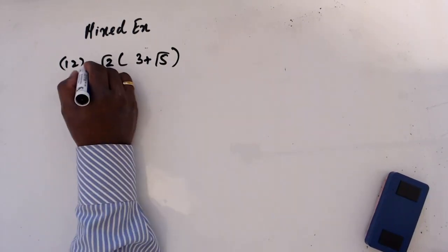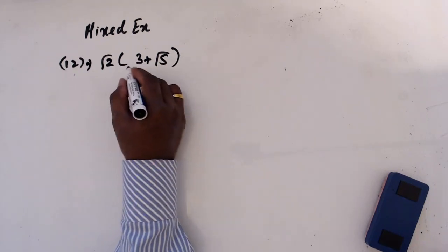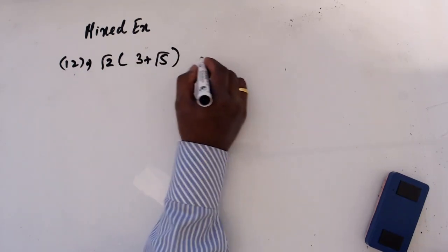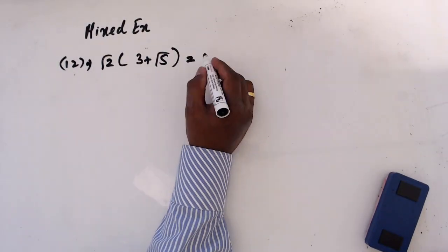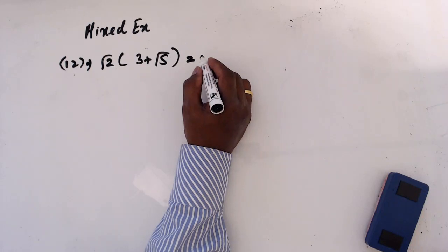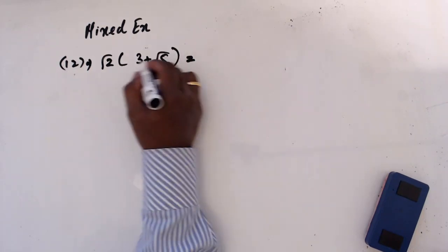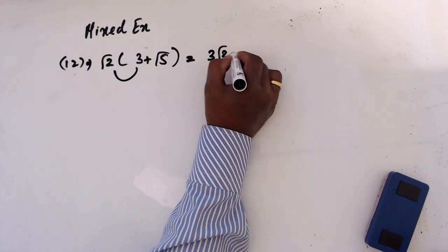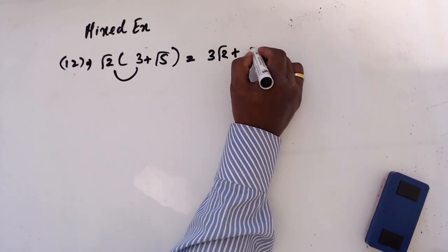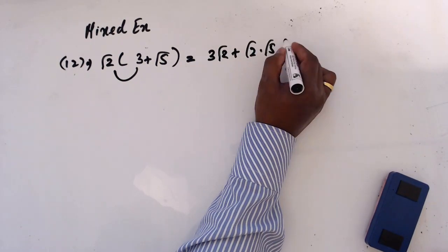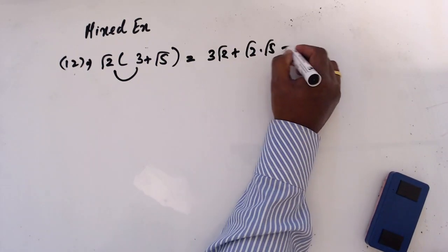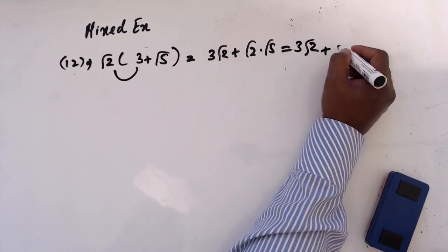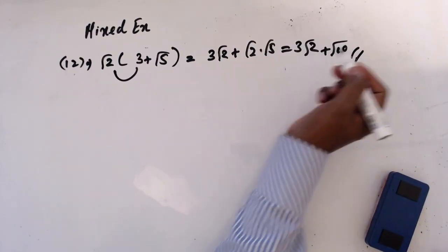Question 12a: √2 × (3 + √5). Multiply out: 3 times √2, and √2 times √5 gives √10. So the answer is 3√2 + √10.